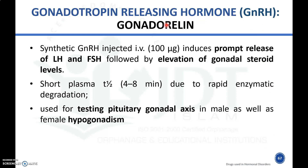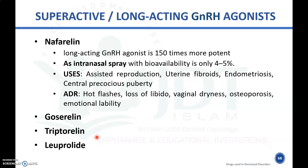Gonadorelin is a synthetic gonadotropin releasing hormone injected intravenously, which induces prompt release of LH and FSH from the pituitary gland, followed by elevation of gonadal steroid levels. It has a short plasma half-life of 4 to 8 minutes due to rapid systemic degradation. It is mainly used for testing of the pituitary-gonadal axis in male and female hypogonadism.